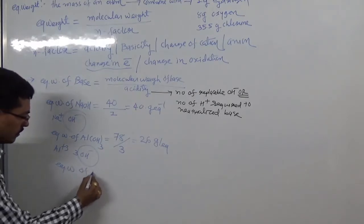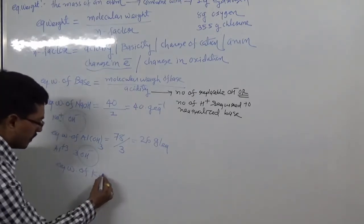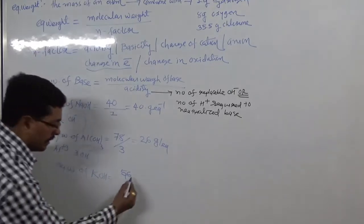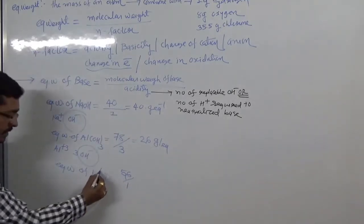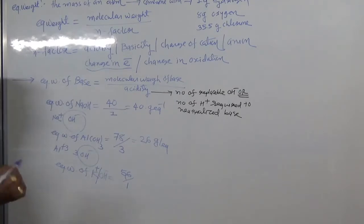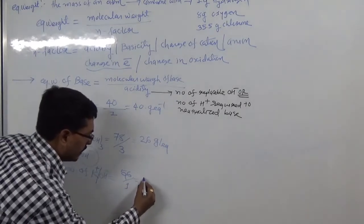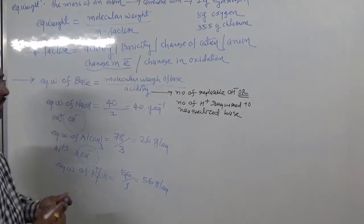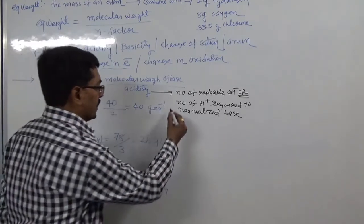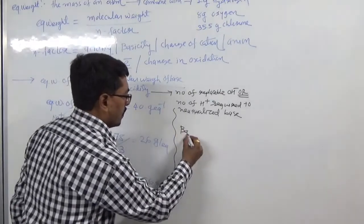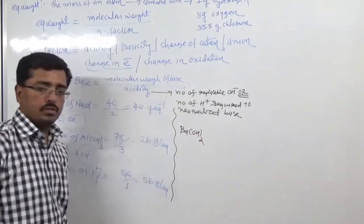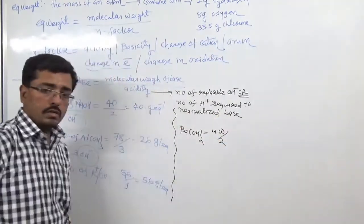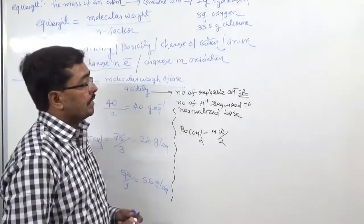For potassium hydroxide (KOH), molecular weight is 56 and the replaceable hydroxyl ion is just one, so equivalent weight is 56 gram equivalent. For barium hydroxide Ba(OH)₂, the number of replaceable hydroxyl ions is two, so you divide the molecular weight by two — try this as homework.